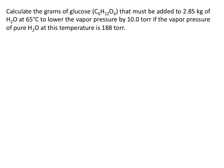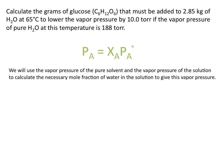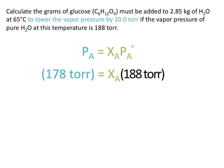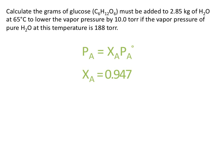Let's try a trickier problem. Calculate the grams of glucose, C₆H₁₂O₆, that must be added to 2.85 kilograms of H₂O at 65 degrees Celsius to lower the vapor pressure by 10 torr, if the vapor pressure of pure H₂O at this temperature is 188 torr. We're going to use the vapor pressure of the pure solvent and the vapor pressure of the solution to calculate the necessary mole fraction of water. We want to decrease the vapor pressure by 10 torr, so we want the vapor pressure of the solution to be 178 torr, giving a mole fraction of 0.947.